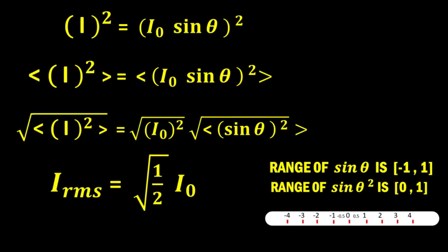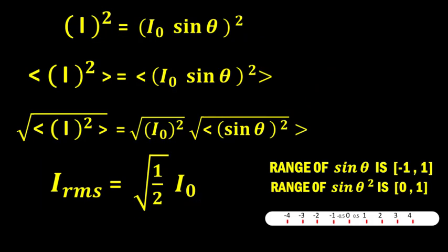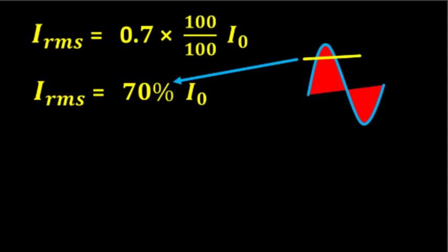In this way we get the real effective value of AC current over a cycle, which we call the RMS value of AC current. The RMS value is also called the DC equivalent of AC current.